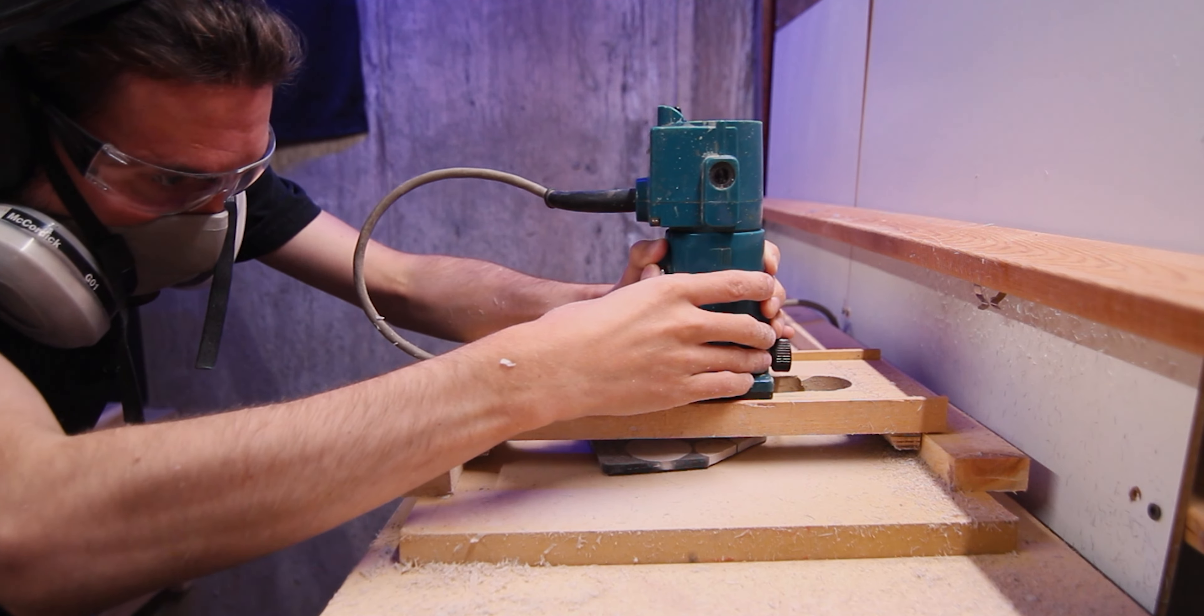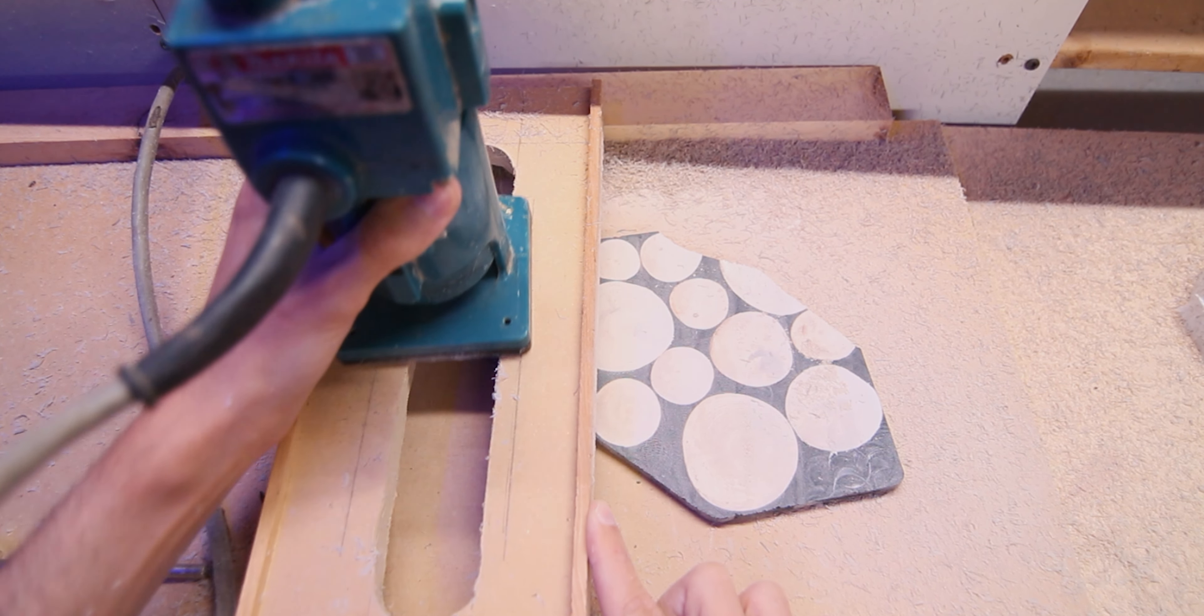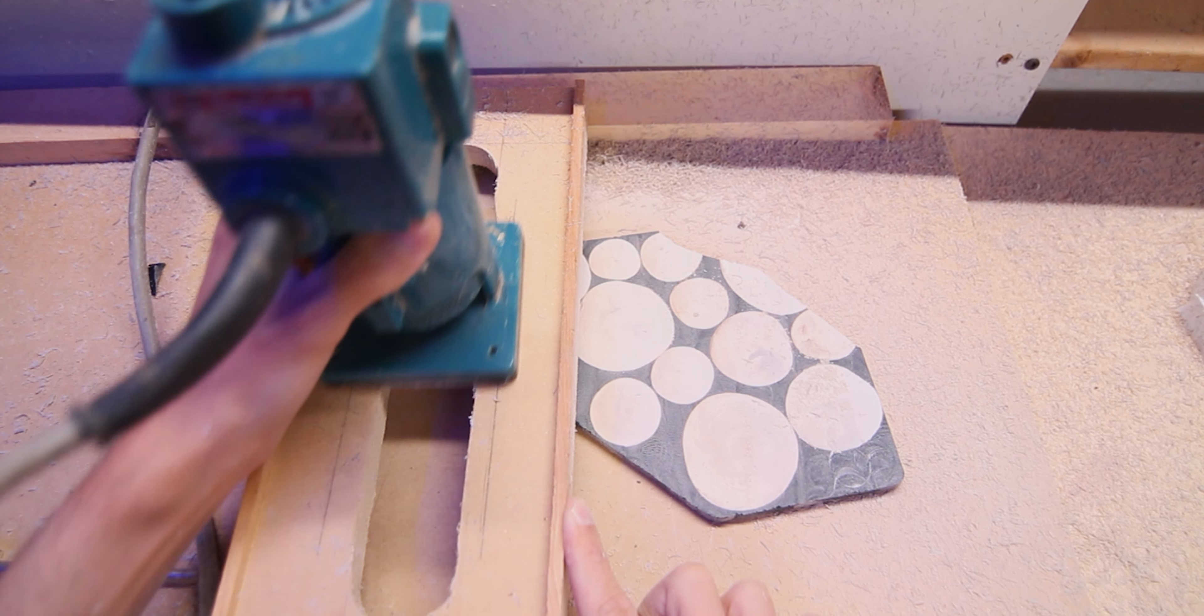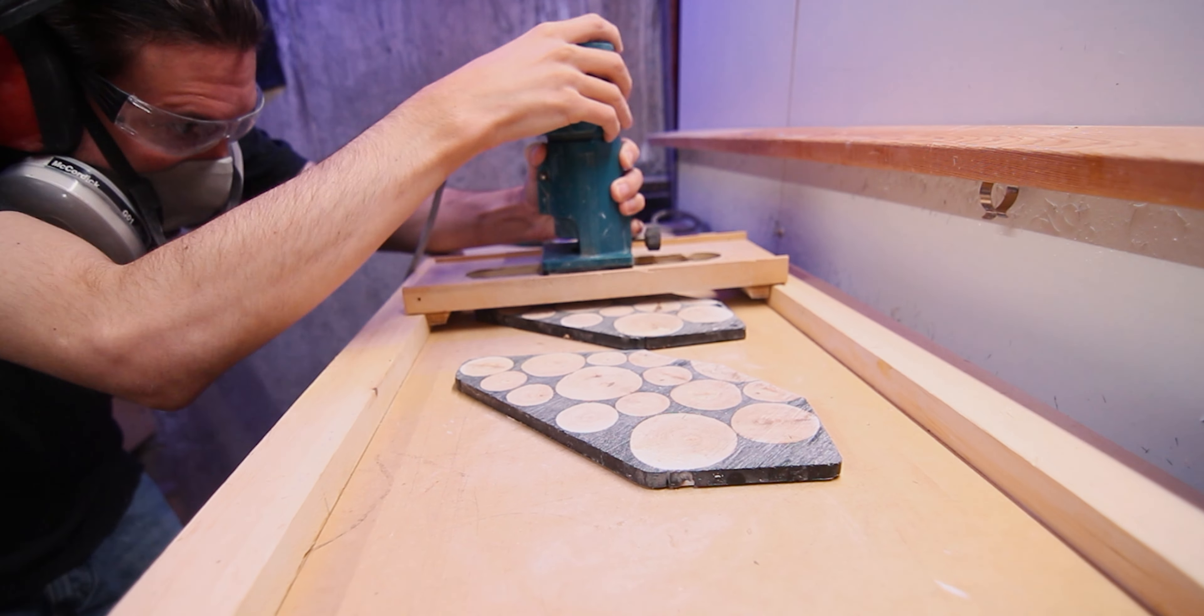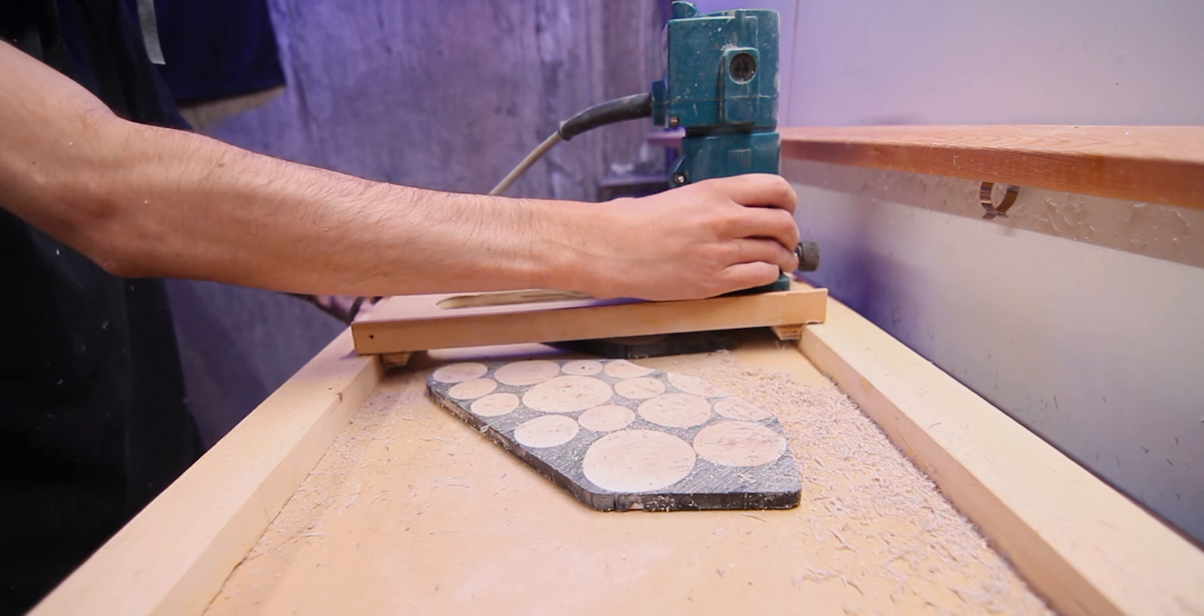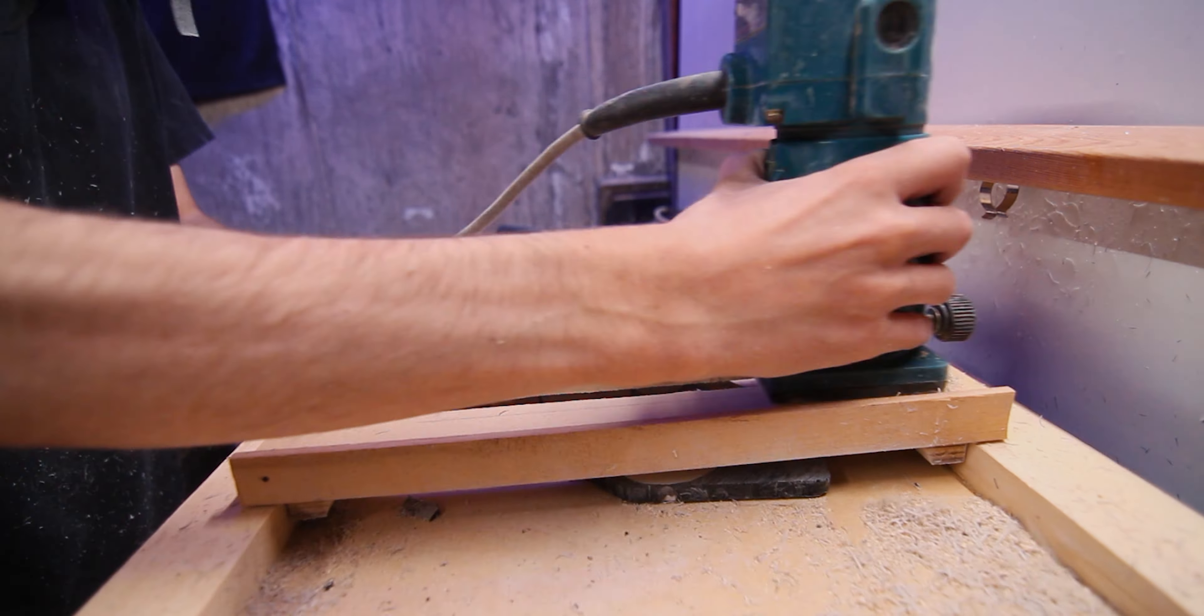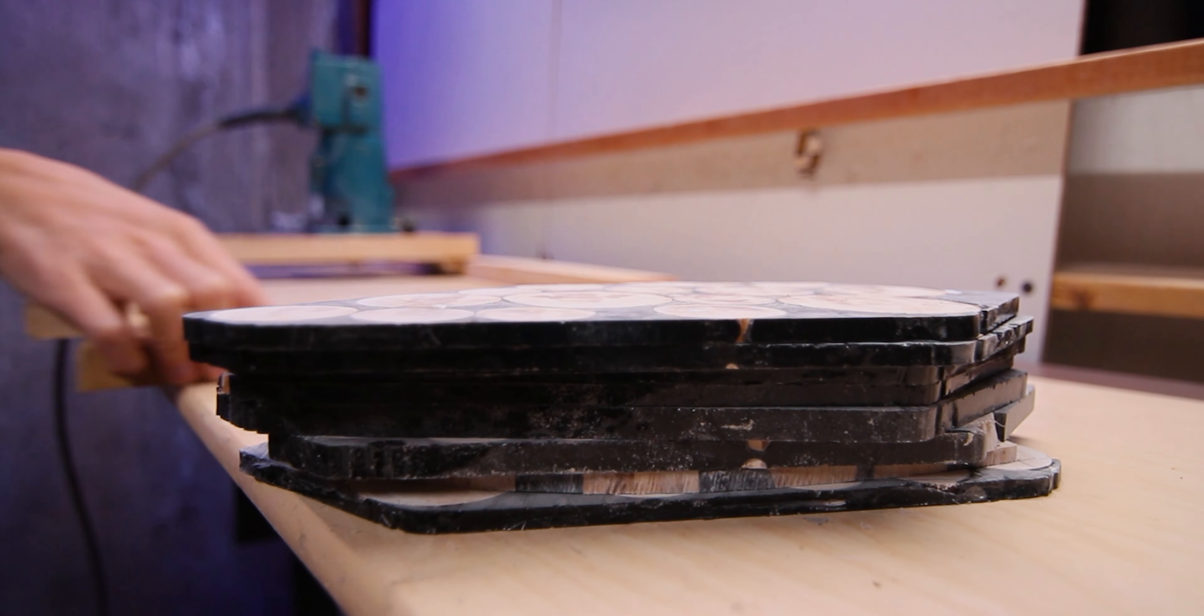To stick my panels to the router sled, I'm going to use a little bit of double sided tape. On the first pass on each panel, I'm going to set my router depth just to take a little bit off each panel so that the top of the panel is perfectly flat.